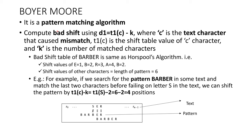This bad shift table construction in Boyer-Moore is the same. We will calculate the shift values for each character of the pattern. Now, there is a little difference here. Suppose some of the characters in the pattern match with the text. In this diagram, S, E, R is the text — a sample text — and Barber is the pattern.